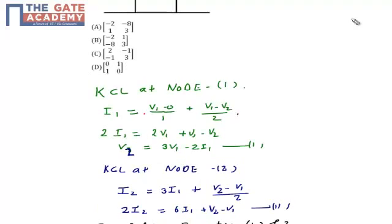In node 1, it will be I1 equals V1 minus 0 by 1 plus V1 minus V2 by 2. If you simplify this equation, we will get V2 equals 3V1 minus 2I1. I name this as equation number 1.